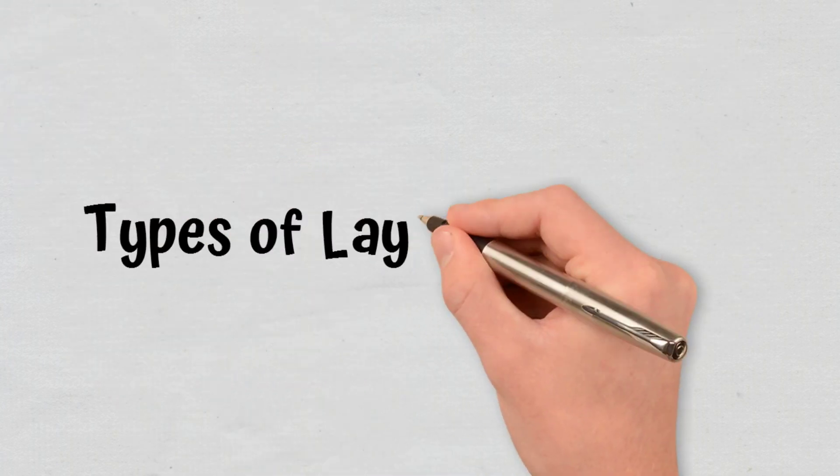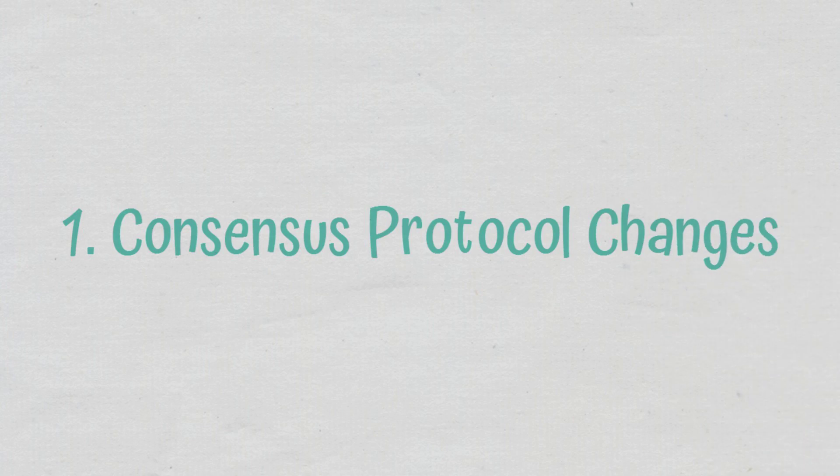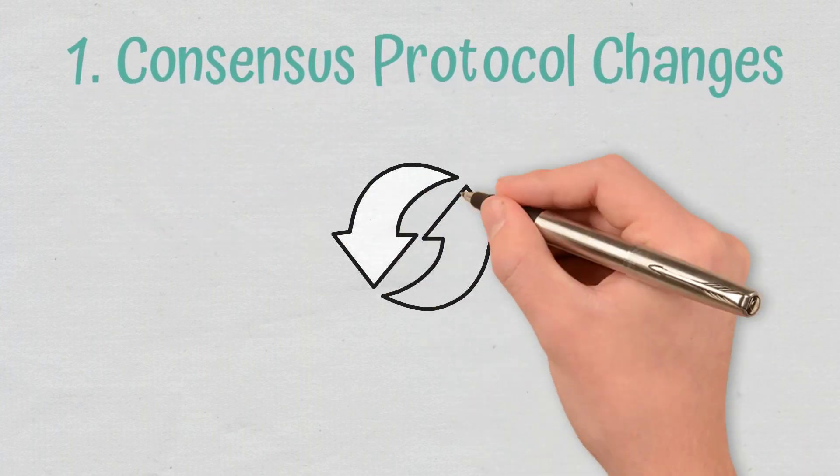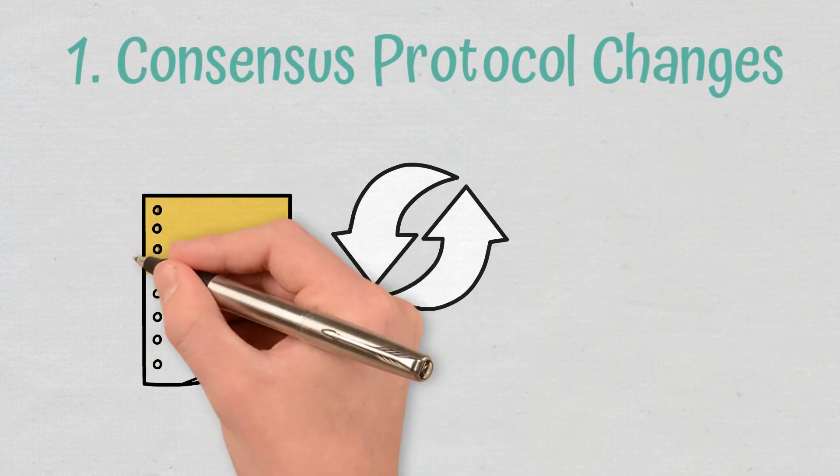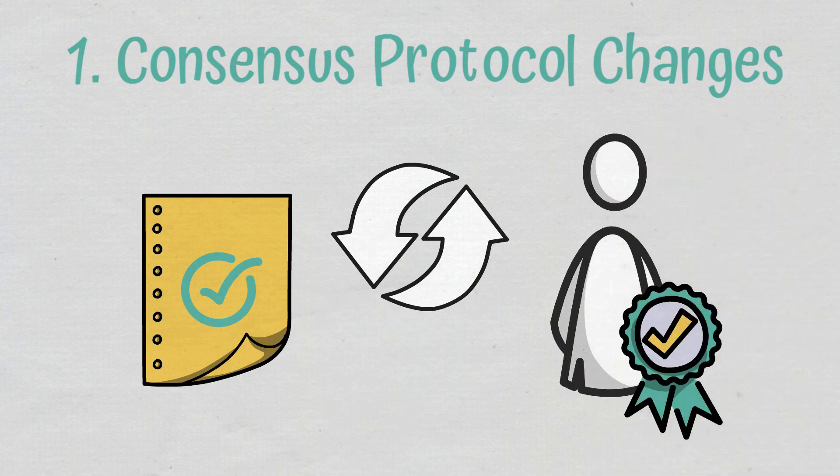Types of layer 1 solutions: The two most common layer 1 solutions include the following. Consensus protocol changes. Since some consensus mechanisms are more efficient than others, projects such as Ethereum are moving from the slow proof-of-work mechanism to proof-of-stake.